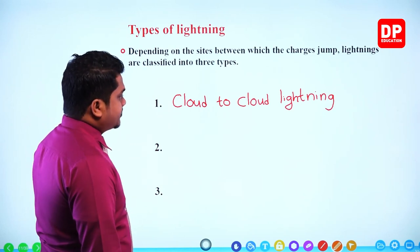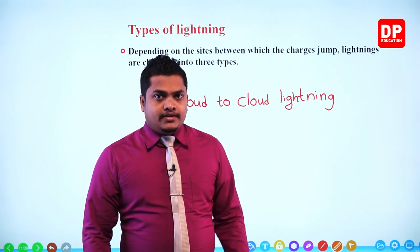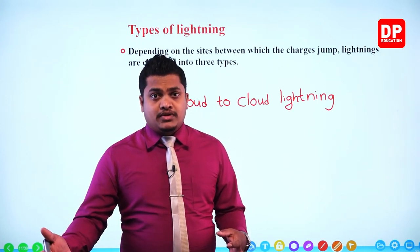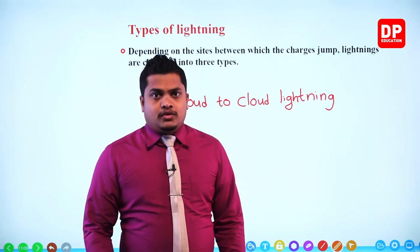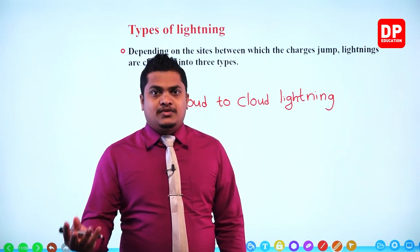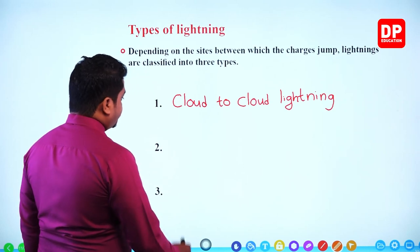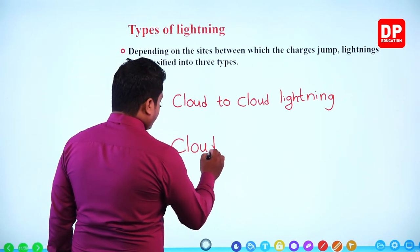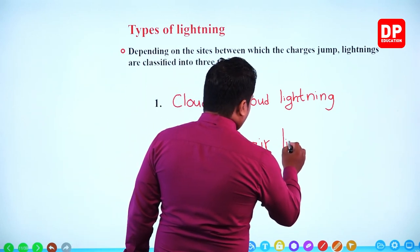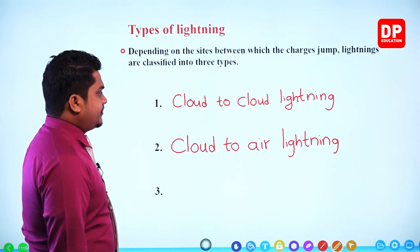The second type: lightning can occur from the cloud to the atmosphere — directly to the atmosphere, the light will discharge. That is referred to as cloud to air lightning, meaning the charges will get released into our atmosphere.